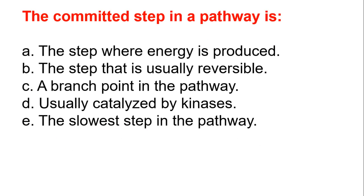The committed step in a pathway is: A, the step where energy is produced. B, the step that is usually reversible. C, a branch point in the pathway. D, usually catalyzed by kinases. E, the slowest step in the pathway. The answer is E, which is the slowest step in the pathway.